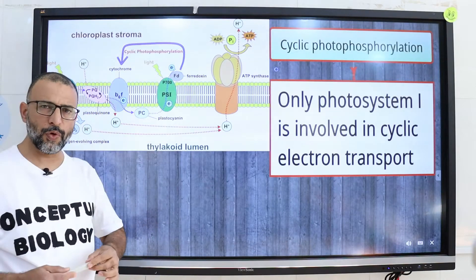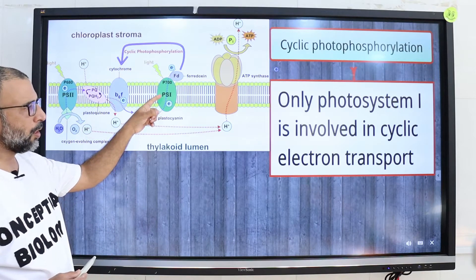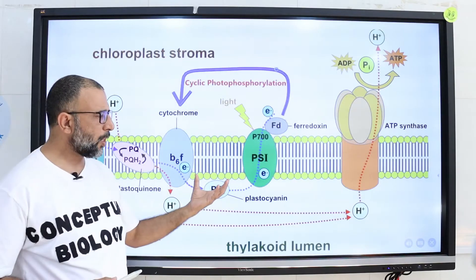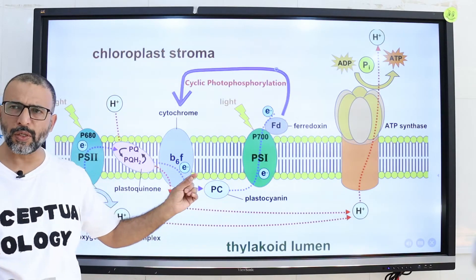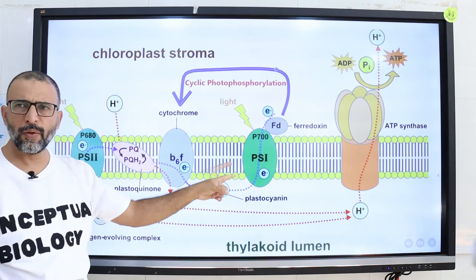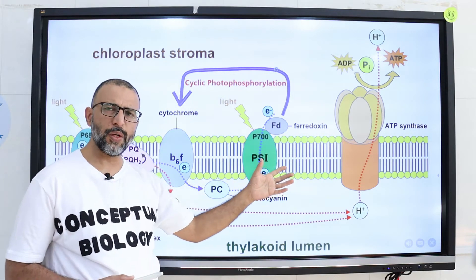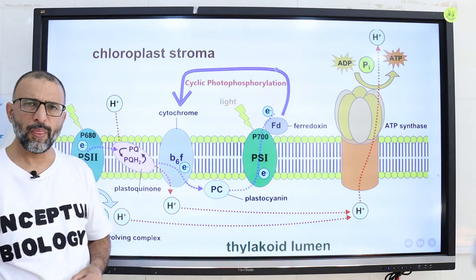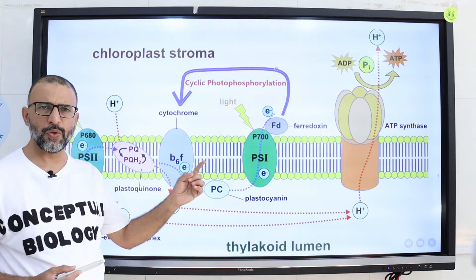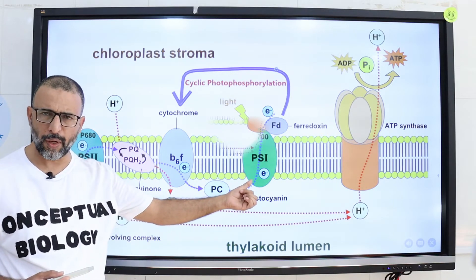Cyclic photophosphorylation involves only photosystem 1 in cyclic electron transport. The photophosphorylation process which results in the movement of electrons in a cyclic manner for synthesizing ATP molecules is called cyclic photophosphorylation. This process takes place in the thylakoid membrane and uses only photosystem 1 and the P700 chlorophyll A molecule.